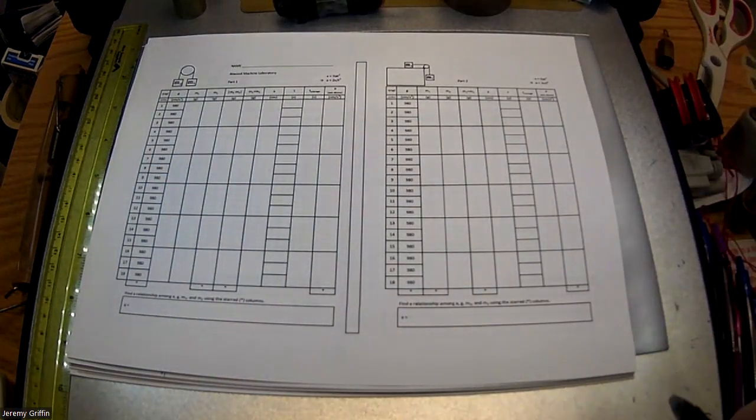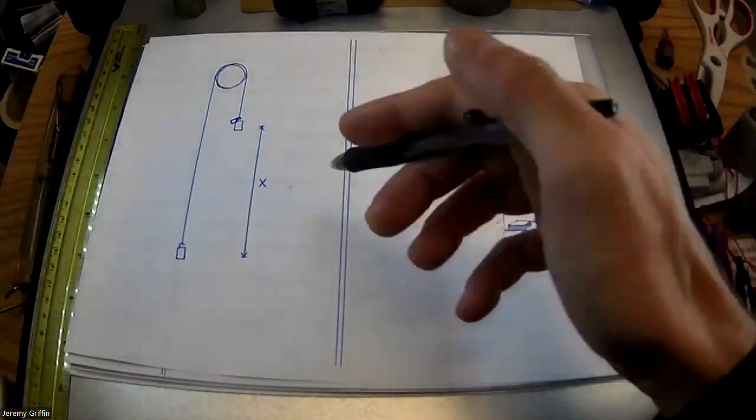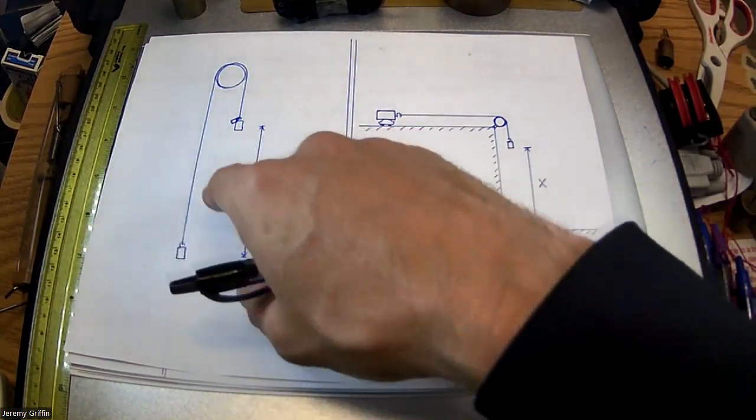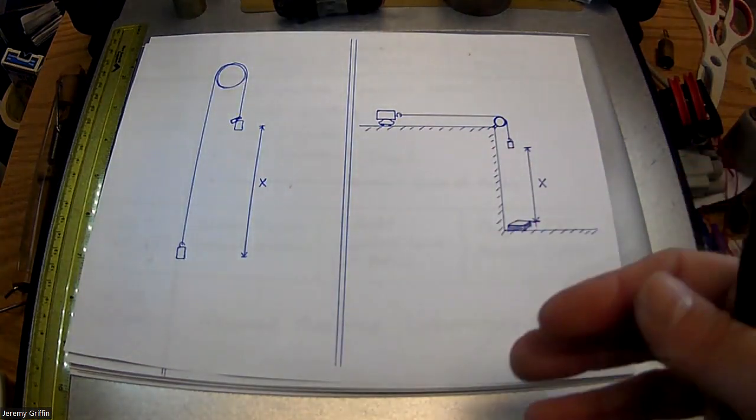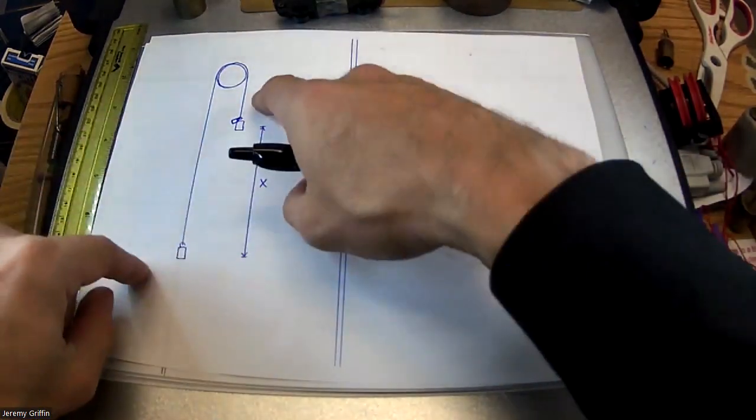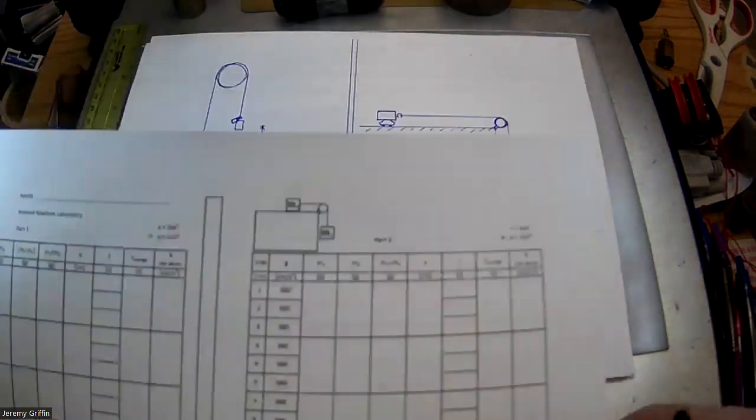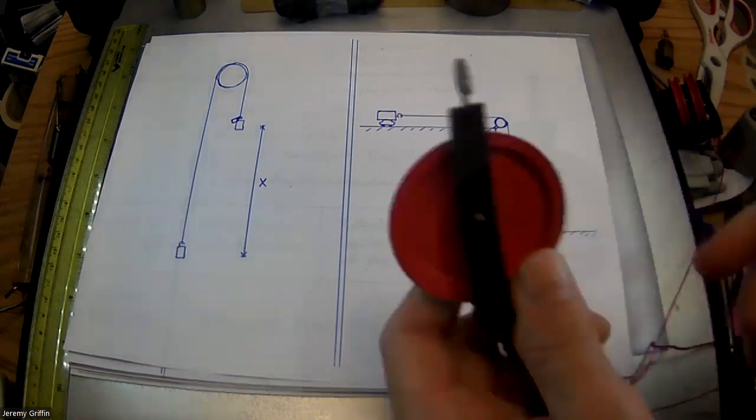So I showed you guys the free-body diagrams for each of these yesterday, and actually you can infer from those PowerPoint slides that that's the beginning of a setup where you can eventually solve for the acceleration of the system based on the input masses. Like you just swap out these masses and it's going to change the motion. I did a demo of this for you the other day too.